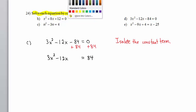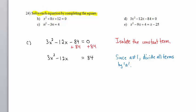The next thing you want to do is check the value of a. a is the coefficient of x squared, and here a is 3. Since a is not 1, we're going to divide every single term on both sides of the equation by 3. We get x squared minus 4x equals 28.